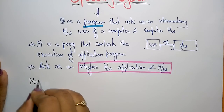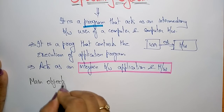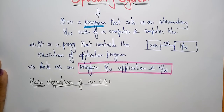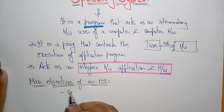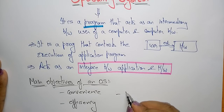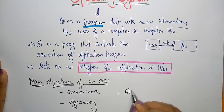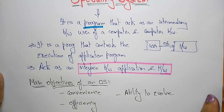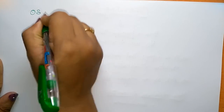Now, what is the main objective of using the operating system? The main objectives of an operating system are: first, convenience; second, efficiency — system efficiency; and third, the ability to evolve, meaning the ability to solve problems. These are the main objectives of using the operating system. In this video I am explaining the basic concept of the operating system.